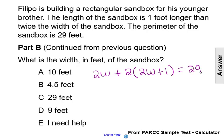Again, this is representing the perimeter is 29, and that the length of the sandbox is one foot longer than twice the width of the sandbox. And now we can solve for w, which is that width in feet.